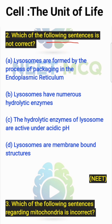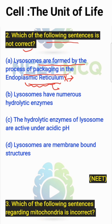Which of the following sentences is not correct? Option A states that lysosomes are formed by the process of packaging in the endoplasmic reticulum. This is an incorrect statement — we know that the processing and packaging of lysosomes happens in the Golgi apparatus. So this is the answer, because the question asks for the not correct statement.